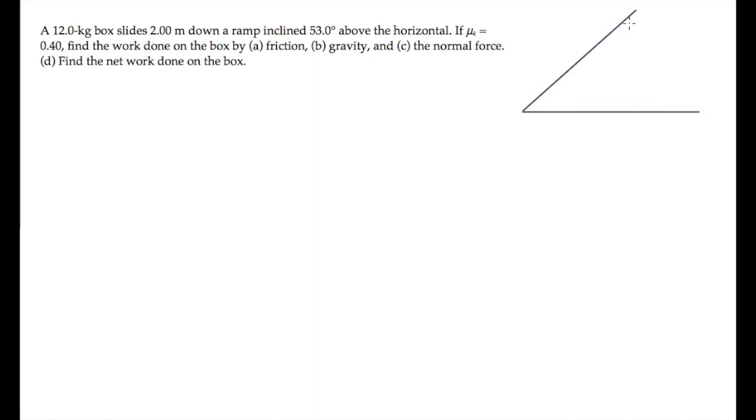The block in this problem is on a ramp inclined at an angle theta of 53 degrees. It has a mass m of 12 kilograms, and it slides a distance delta s of 2 meters down the ramp. We're asked to calculate, in parts a, b, and c, the work done by three forces acting on it.